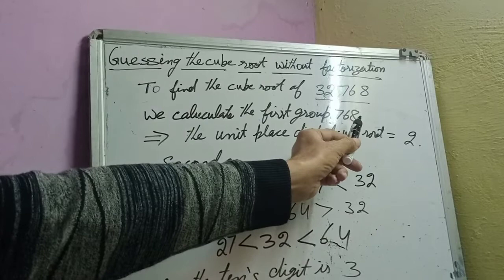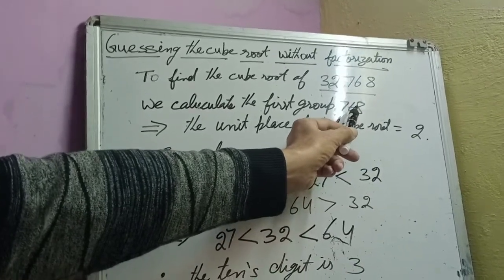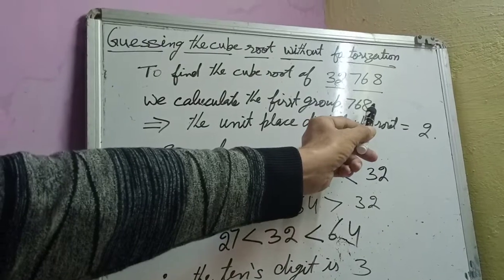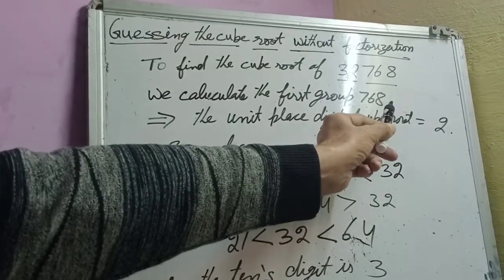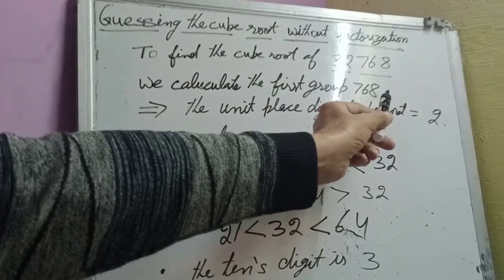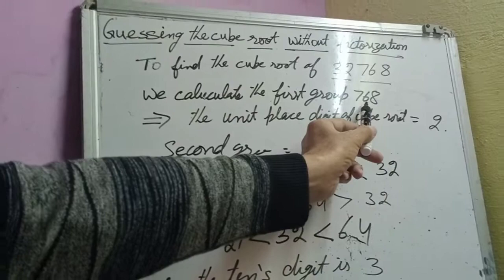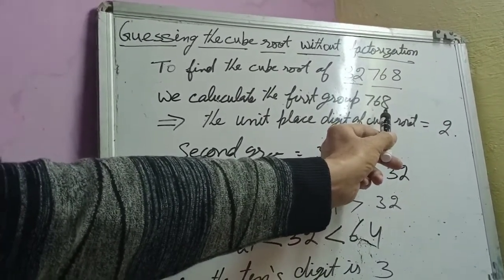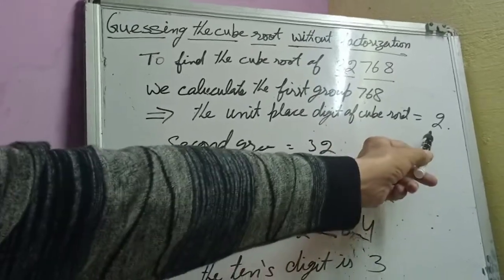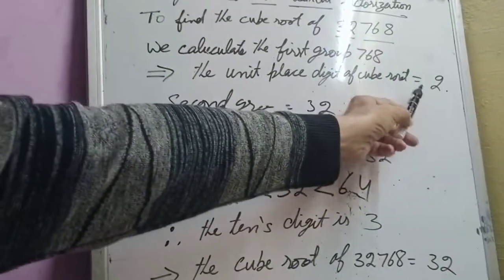At unit place, see, 2 is the number that gives us 8 at unit place because 2 cubed is 8. That means we have got the unit digit and that is 2.